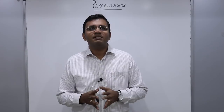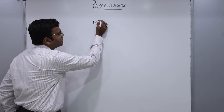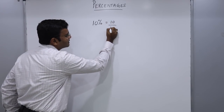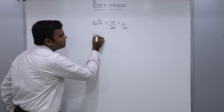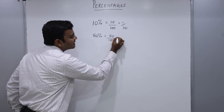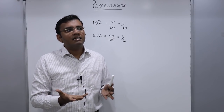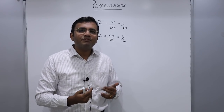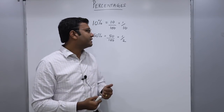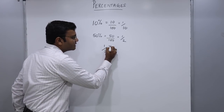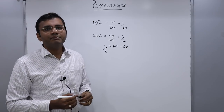Let's look at some basic concepts of percentages. What is 10 percent? 10 percent is nothing but 10 by 100, which in terms of fractions is 1 by 10. Similarly, 50 percent is 50 by 100, which is 1 by 2. If I have 100 apples and Raju has 50 percent of my apples, he has half of what I have — so he will have 50 apples. So 50 percent in terms of fractions is 1 by 2.